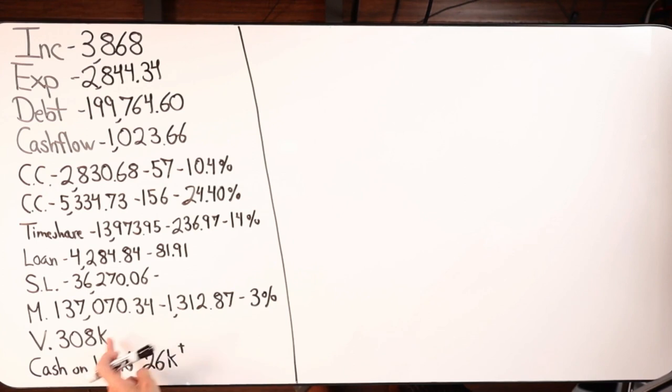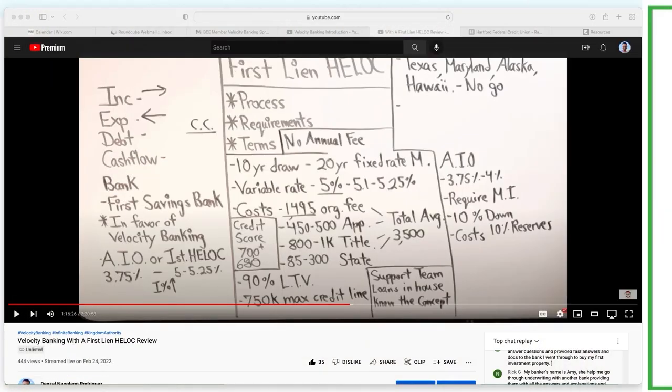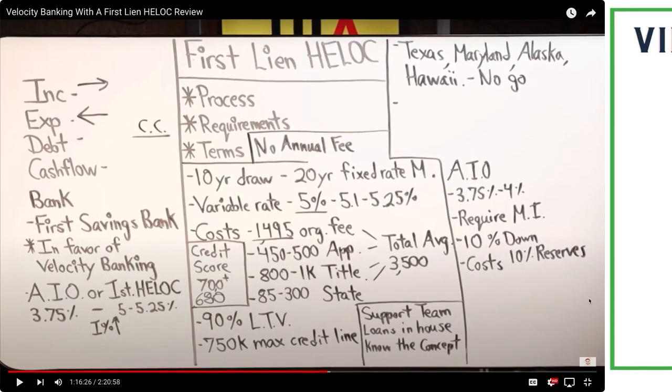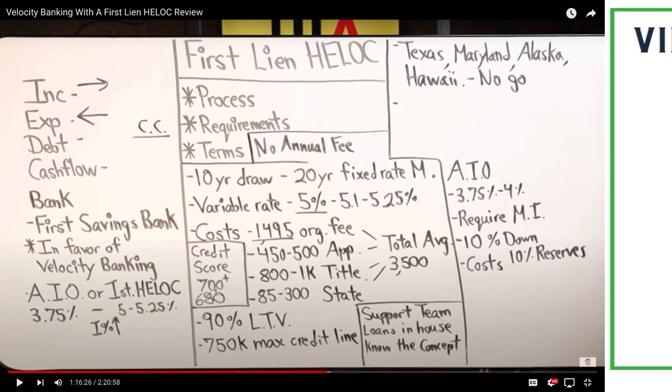The opportunity I see is potentially considering a first lien HELOC. They could go with that bank I mentioned last week, or First Savings Bank. I dropped the link last time and can do it again. It's on my website and in the description of every video I put out. I'm going to drop a video where I interviewed someone from that bank. It's two hours twenty minutes long, very detailed.